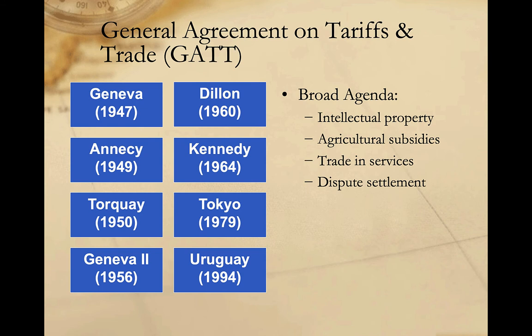The final round, and by far the most complex round of GATT talks, was the Uruguay Round, concluded in 1994. It involved 123 countries and focused on a wide variety of issues beyond reducing tariffs. The Uruguay Round addressed intellectual property rights, agricultural subsidies, non-tariff barriers, trade in services, and established a dispute settlement mechanism to resolve trade disputes and prevent trade wars. But perhaps the most significant outcome of the Uruguay Round was the agreement to establish the World Trade Organization, or WTO.